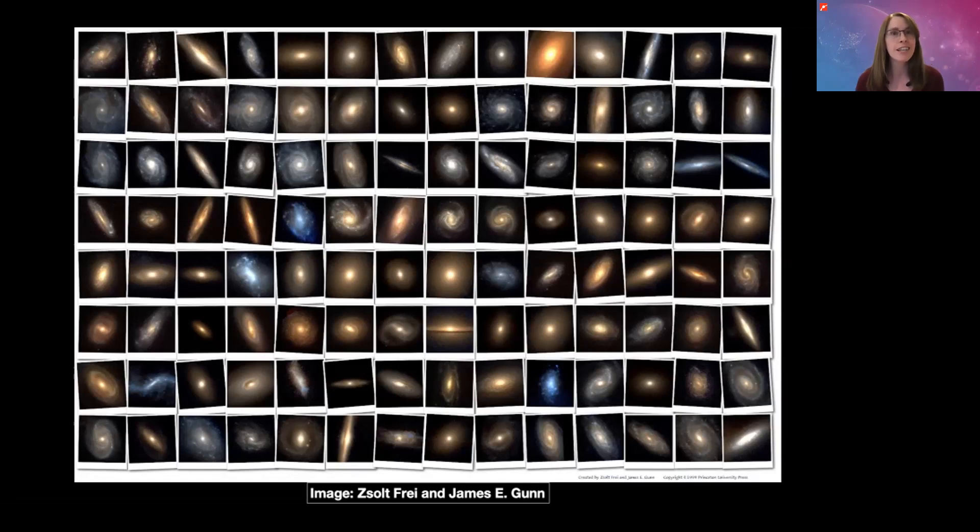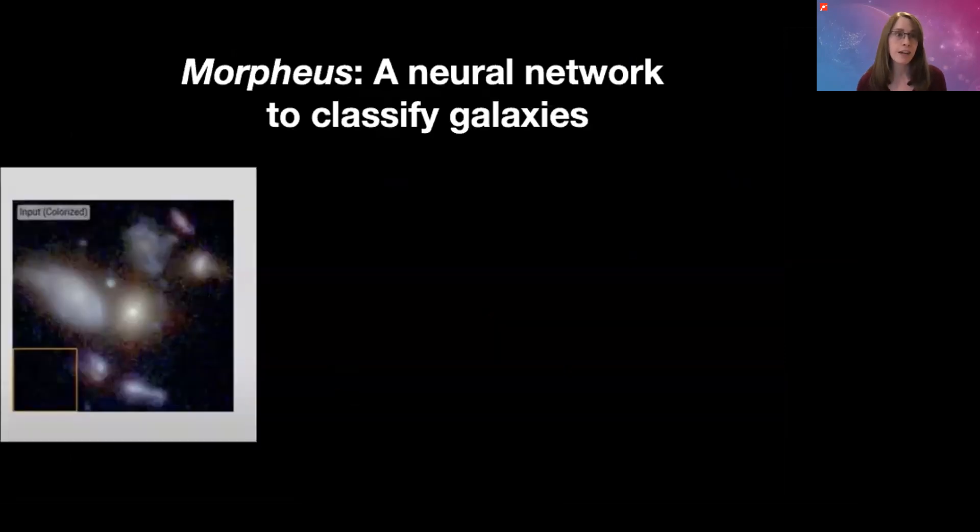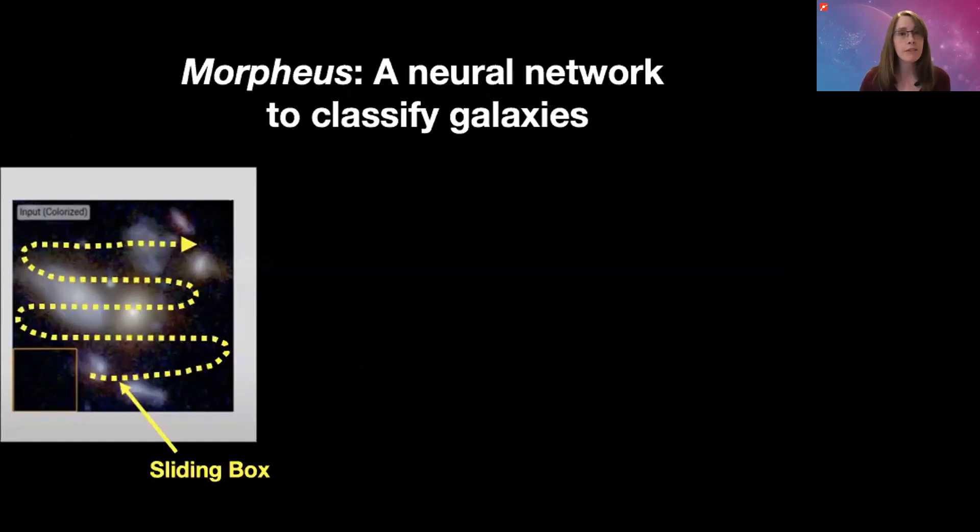That's the advantage of neural networks - they're fast learners. I'm just going to show you a little video now from the team of Morpheus classifying a group of galaxies that it's never seen before. You're going to see over here on the left, this little yellow box moving from left to right and then up the image as it scans pixel by pixel.